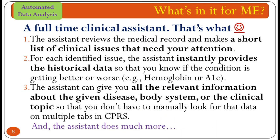So, what's in it for me? A full-time clinical assistant — that's what. First, the assistant reviews the medical record and makes a short list of clinical issues that need your attention. Second, for each identified issue, the assistant instantly provides the historical data so that you know if the condition is getting better or worse. Third, the assistant can give you all the relevant information about the given disease, body system, or the clinical topic so that you don't have to manually look for that data on multiple tabs in CPRS. And the assistant does much more.